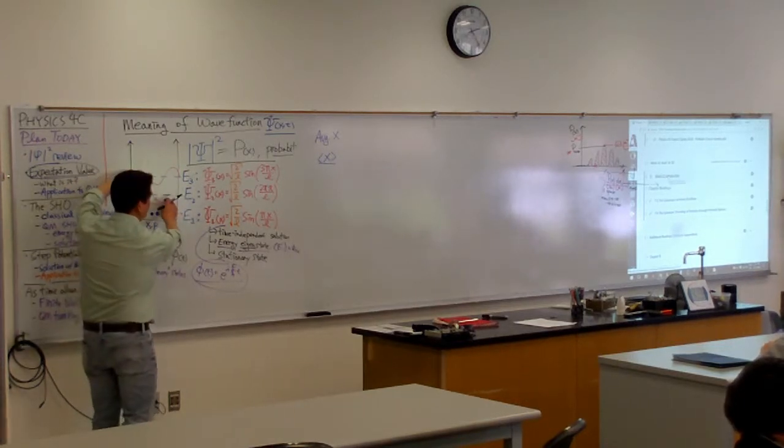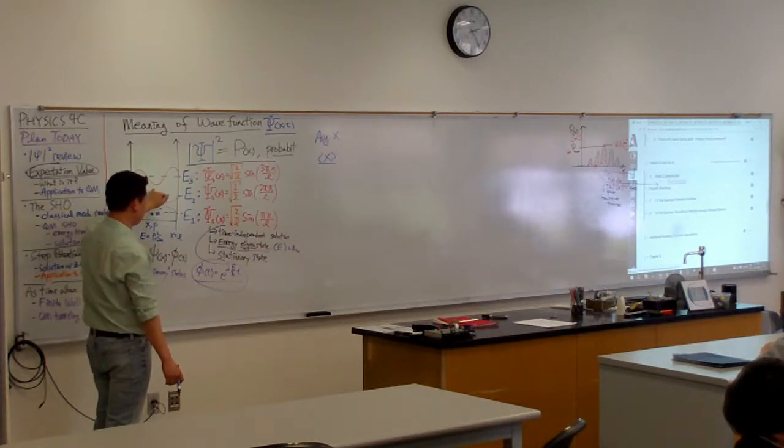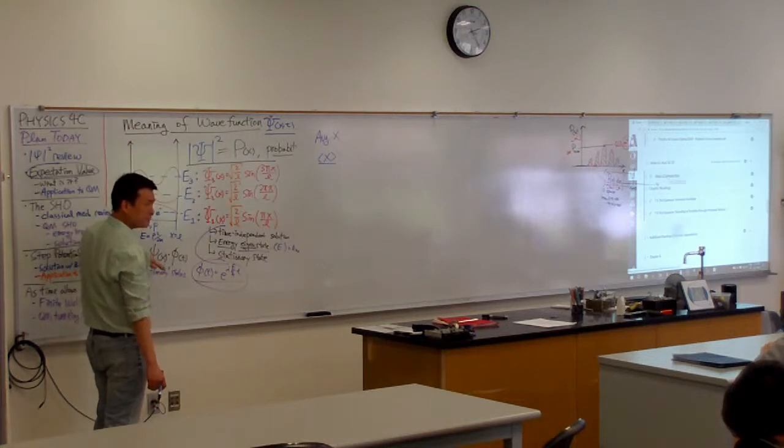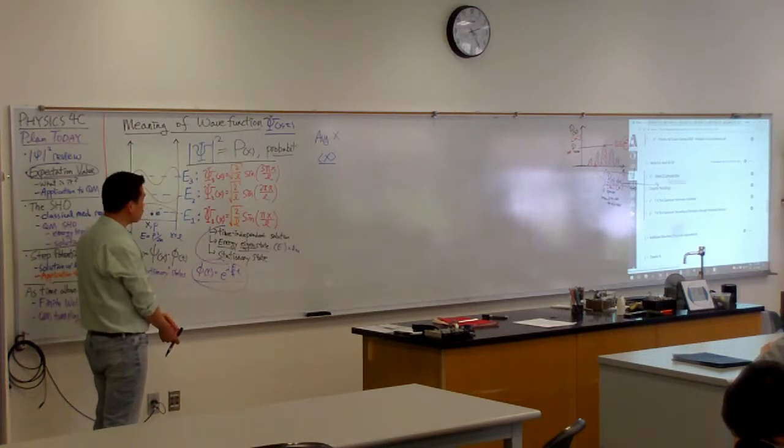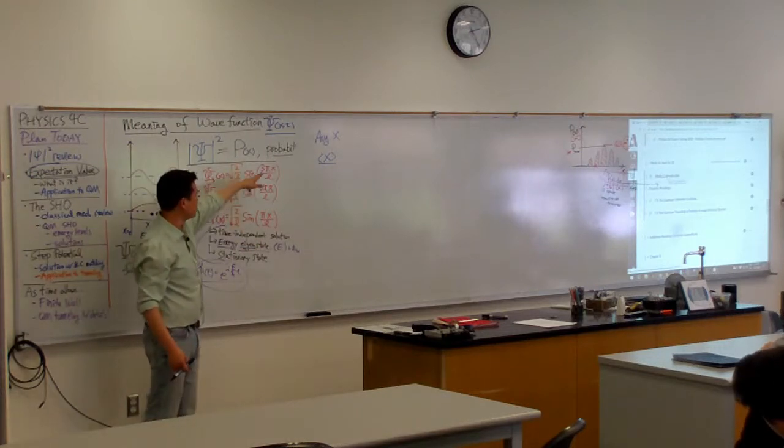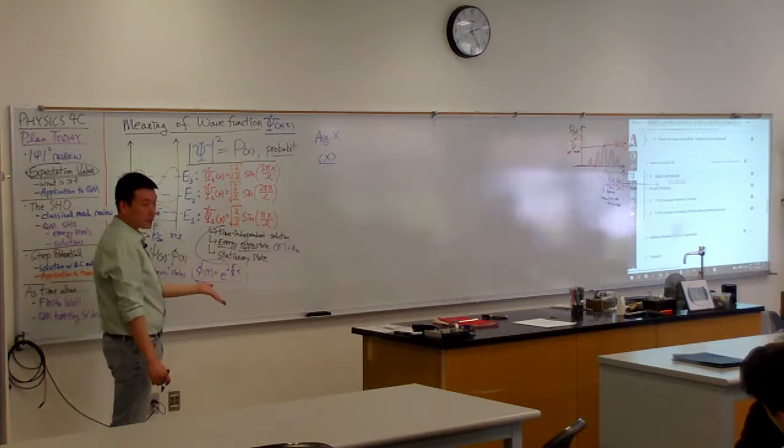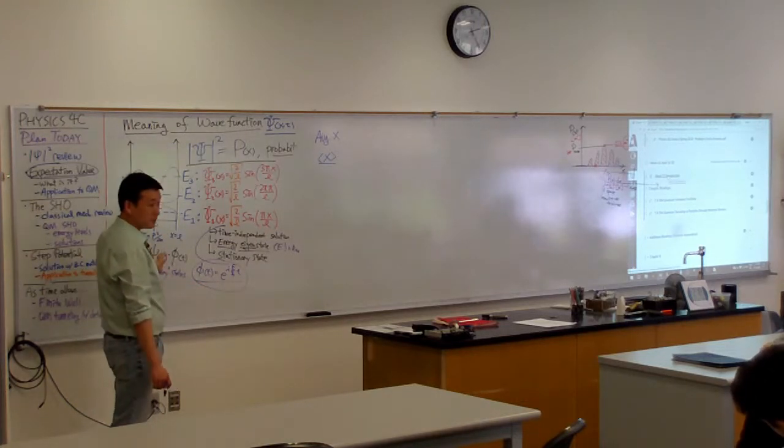That's where they are most likely to be found, but what about the average position? Still middle, right? Same thing for here, e3? Same thing for all of them. So let's try doing it for general state here with just the n, and see if we get the expectation value of the particle being in the middle.